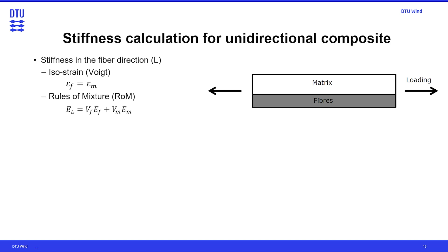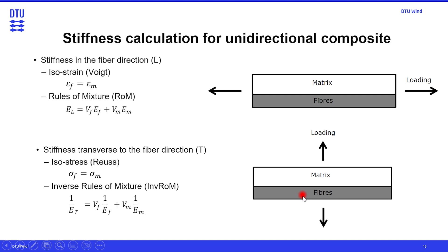We can do stiffness calculations of the unidirectional composite. For the stiffness in the fiber direction — called the longitudinal direction — we have iso-strain, meaning the strain in both the fiber and matrix phases is equal. Based on that, the stiffness of the composite is given by the fiber volume fraction multiplied by the fiber stiffness plus the volume fraction of matrix multiplied by the matrix stiffness. For loading in the transverse direction, we assume iso-stress — the same stress in both material phases but not the same strain — and we derive the inverse rule of mixtures for transverse stiffness.